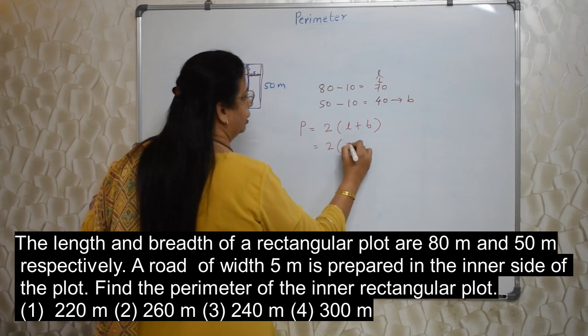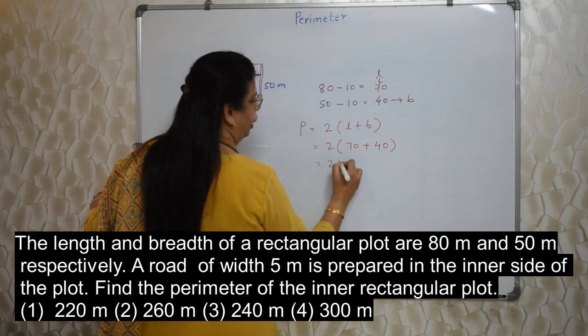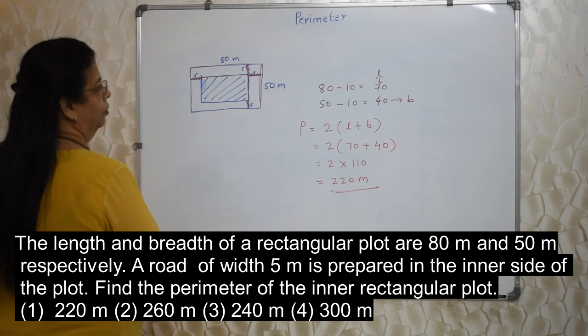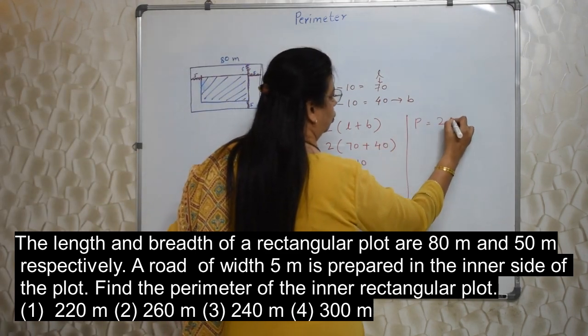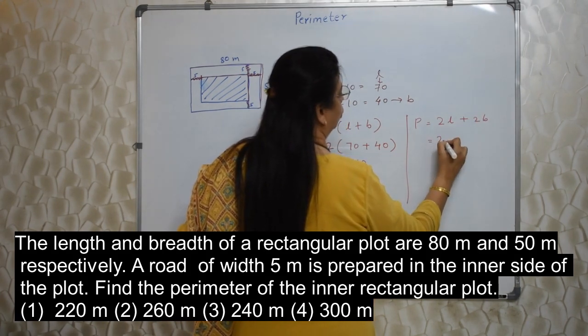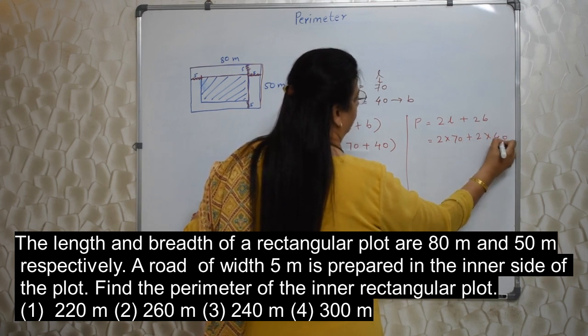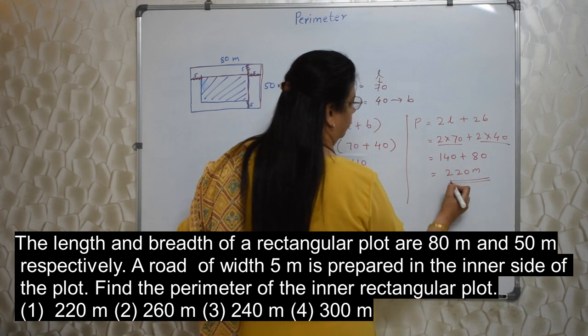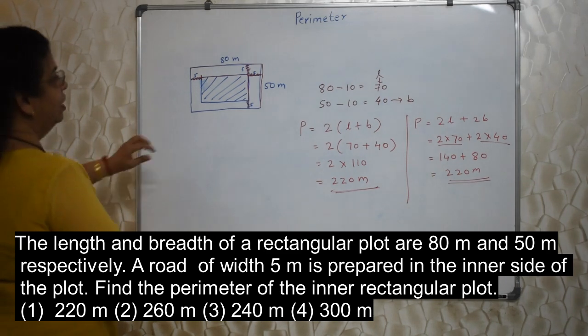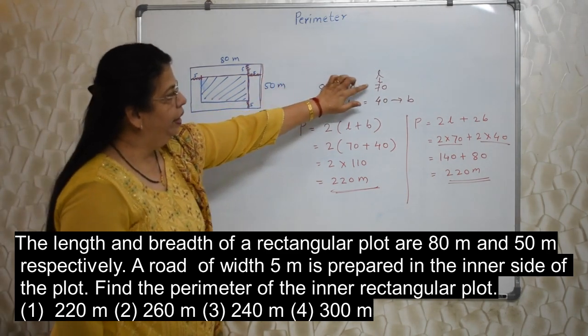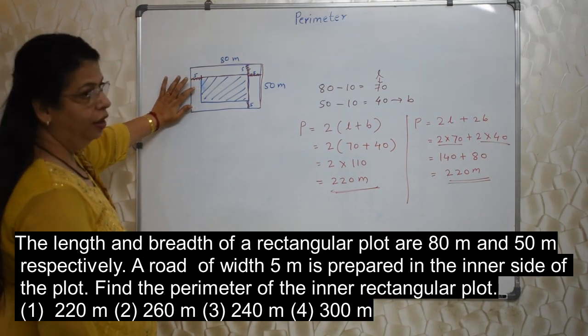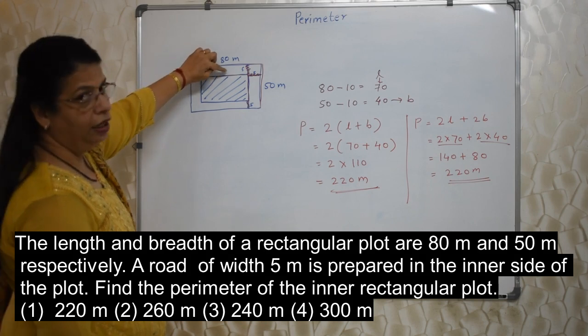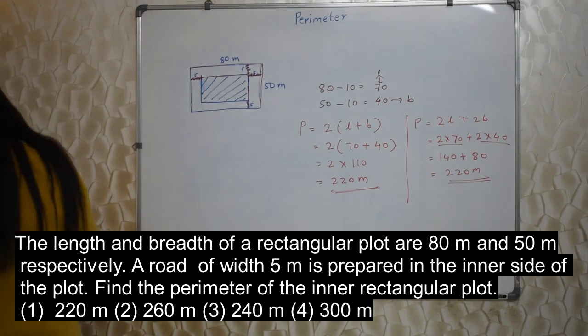That also we will do. 2 into length is 70 plus breadth is 40. So, 2 into 70 plus 40 is 110. So, answer is 220 meters. If we use that other formula, the answer won't change. P is equal to 2 times length plus 2 times breadth. 2 times length means 2 into 70 plus 2 times breadth is 2 into 40. By BODMAS, first we need to do this. 140 plus 80. Addition is 220 meters. Both the formulas are correct. This is the intellectual portion. How to arrive at 70 and 40? That is more important. So, you have to see this figure. Visualize it properly. How much we need to deduct from the bigger rectangle to find out the smaller rectangle measurements. Then we are done. Okay?